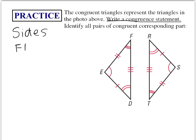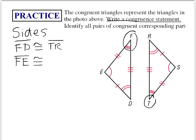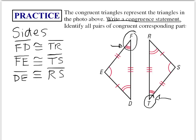Starting with side FD — I know it's congruent to side TR. The order matters: F and T both have three congruency marks, so FD is congruent to TR. Next, FE is congruent to TS — again starting with the three-mark side. Finally, side DE is congruent to RS. Those are the congruency statements for all three sides.